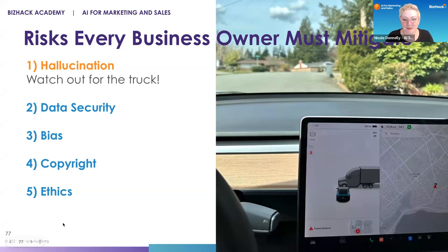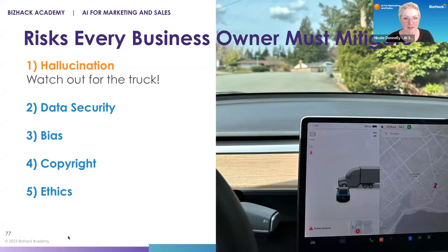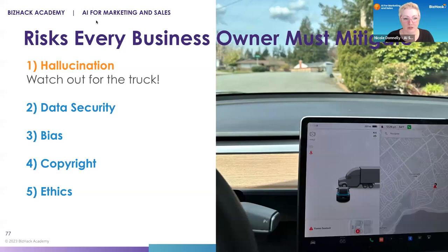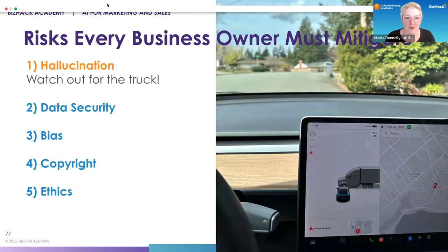I was pulling up to an Airbnb, and if you look at the picture, you can see there's a semi in front of my car. The car was hallucinating, saying that there was a semi truck in front of my car, when it was just a bush on the side of the road. If you take that into every piece of AI you're using, you still have to be the driver and provide discernment — you have to audit it, look at it, and make sure it's true.